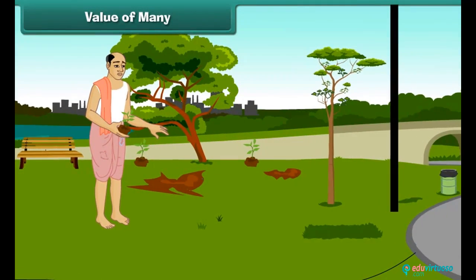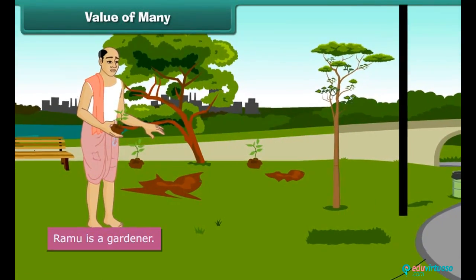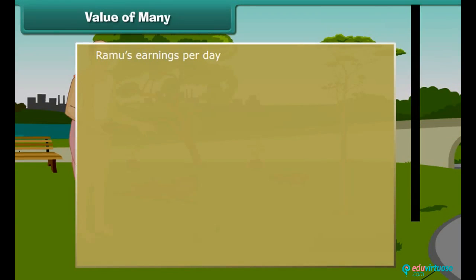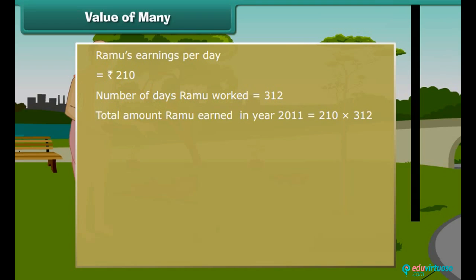Ramu is a gardener. People engage his services and pay him 210 rupees for a day. In the year 2011, he worked for 312 days. How much did he earn in 2011? Ramu's earnings per day is 210 rupees, and the number of days Ramu worked is 312. Total amount Ramu earned in 2011 is 210 × 312.